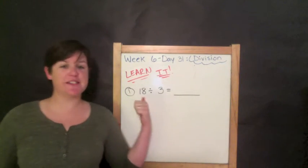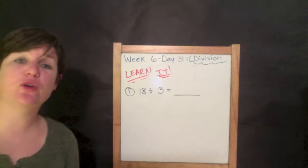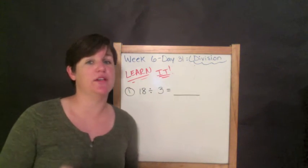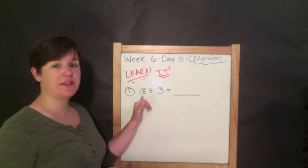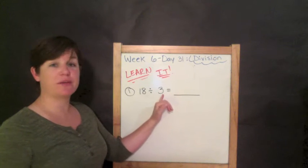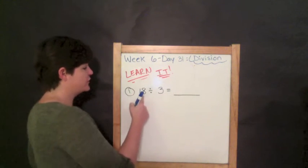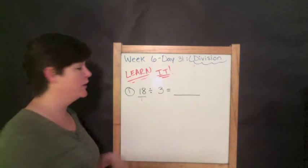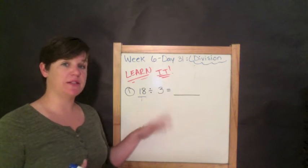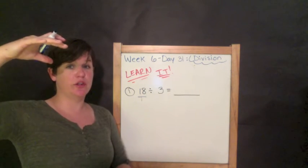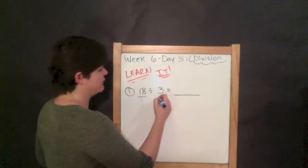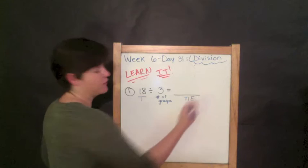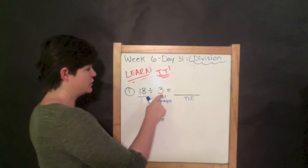Alright. Here we are at the learn it section. We're on problem number one. The directions say to find the quotient. That's the answer to a division problem. And to model using a drawing, which I want you to do for right now. That way you understand what is going on here with division. So we have 18 in our dividend divided by 3 as our divisor. We're finding our quotient. And the 18, the first number for the division, is always going to be our total. I'm going to put a T there for our total. Now, we don't have a word problem to tell us what the 3 represents. It could be your groups, your number of groups, or your things in each. So for this one, I'm going to choose to have 3 be the number of groups, which means we will be looking for our quotient of our TIE, our things in each.